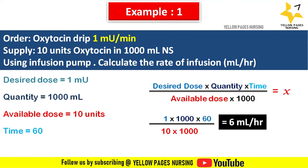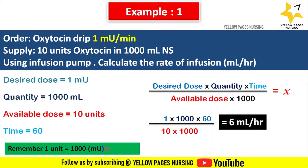The key point to remember is that 1 unit equals 1000 milli-units. Here, the available dose is in units and the doctor's order is in milli-units, so to convert units to milli-units we multiply the denominator by 1000. Therefore, we set 6 ml per hour in the infusion pump.